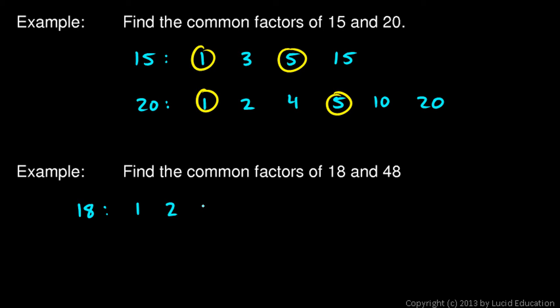And then 48 has a lot of factors: 1, 2, 48 is divisible by 3 also because 3 times 16 is 48, so 3 is a factor. And 4 because 4 times 12 is 48.